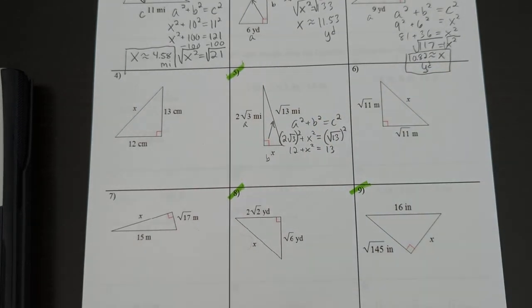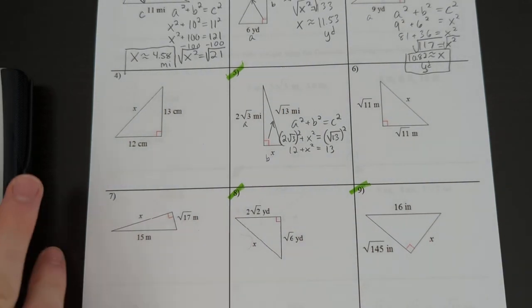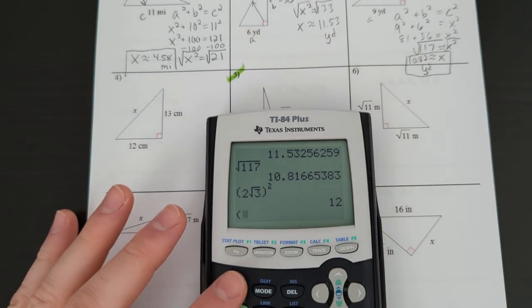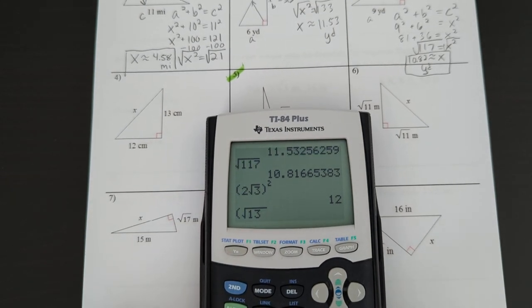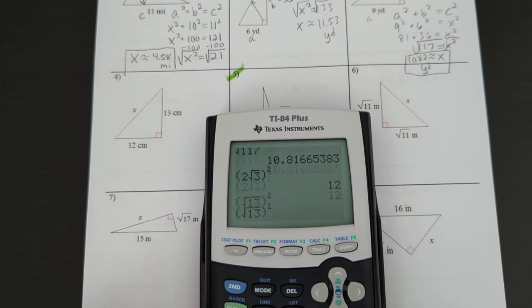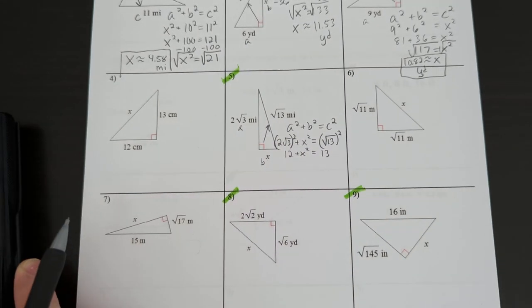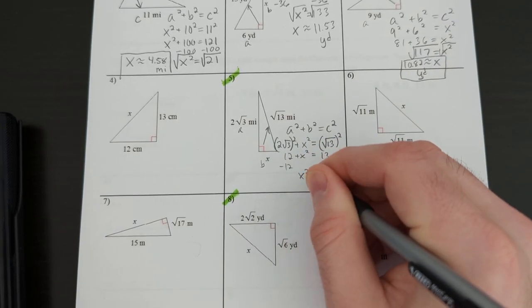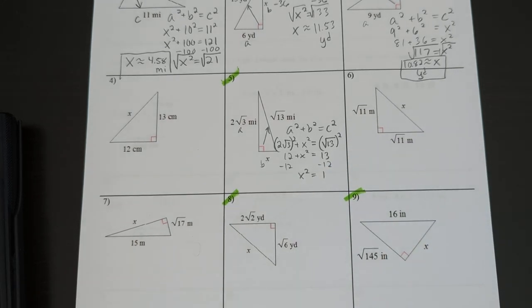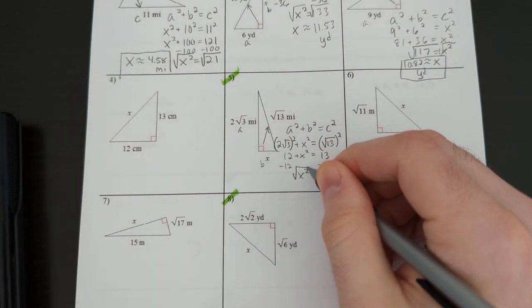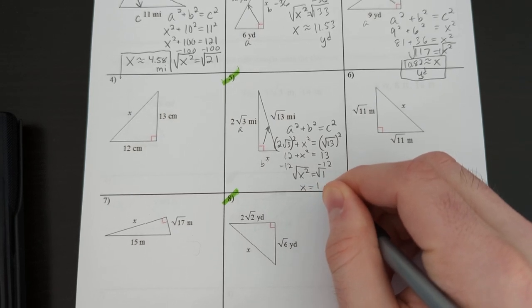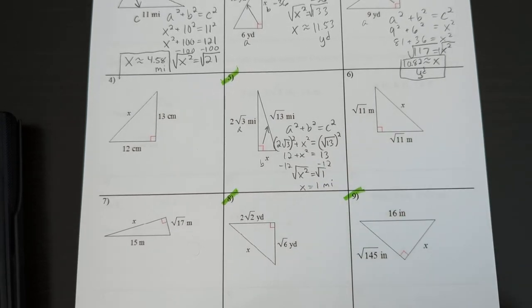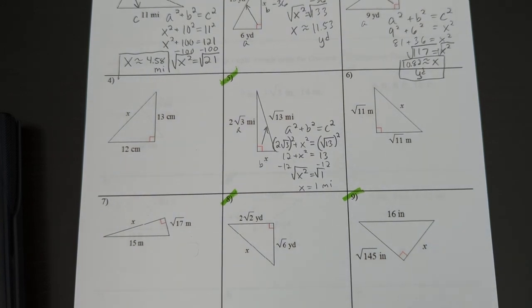And that's because the square root and the square kind of cancel each other out. It's like adding 5 and subtracting 5. You end up at the exact same spot. In case you guys need to check that, let's type in the calculator real quick. You'll end up with a result of 13. Now, we're going to solve for x squared. x squared equals 1. Square root both sides. x equals 1 mile.